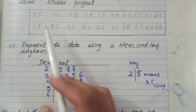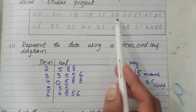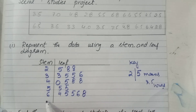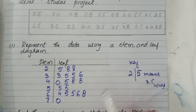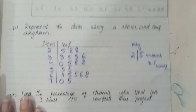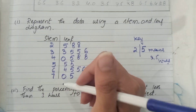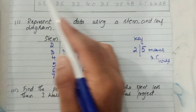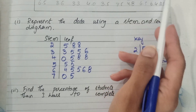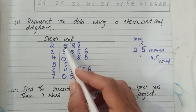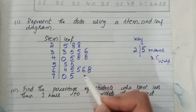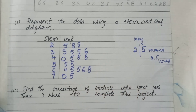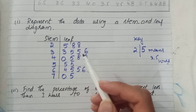Stem 7 has leaves 0 and 5 — giving values 7.0 and 7.5. To verify, we count all the digits: 1 through 20 — yes, all 20 data points are represented. The stem-and-leaf diagram is complete.